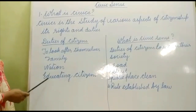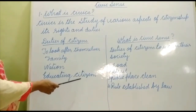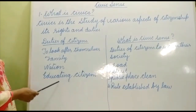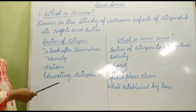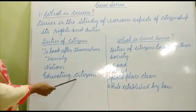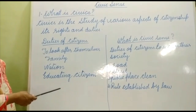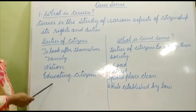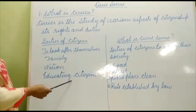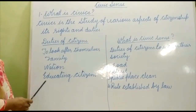Next is educating citizens. Educating citizens means — out of 100 percent, about 25 people are uneducated. Educating does not mean just teaching them, but giving them awareness about their duties and rights and whatever things are happening in their society.